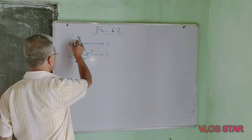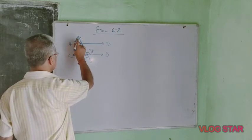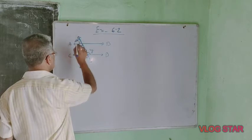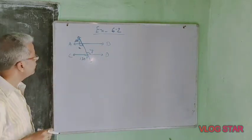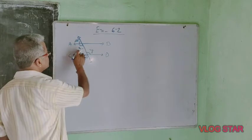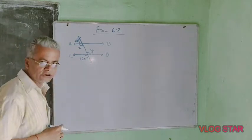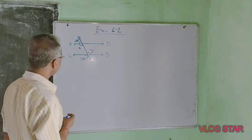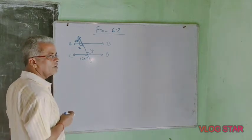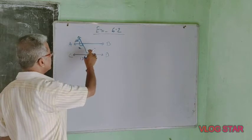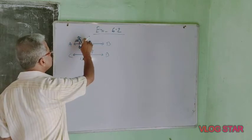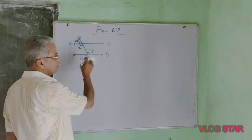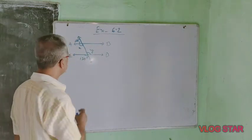We have previously discussed that vertically opposite angles are equal, corresponding angles are equal, and also alternate angles are equal. Here we see x and y are alternate angles, so x and y will be equal. Because corresponding angles are equal, this one is equal to this one, and this one is equal to this one, so x and y are alternate angles and both will be equal.